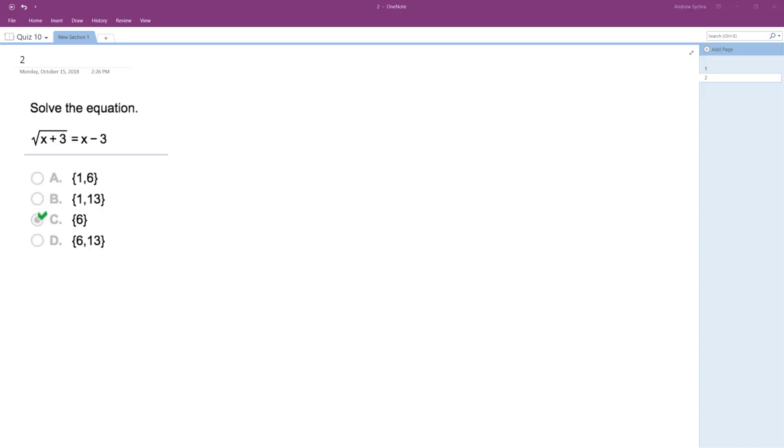So the square root of x plus 3 is equal to x minus 3. Find the solutions. Well, I got the solution below, but we want to solve this completely, so x plus 3.